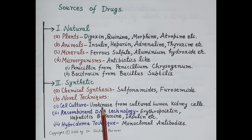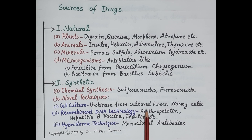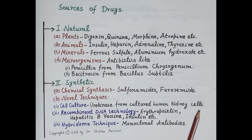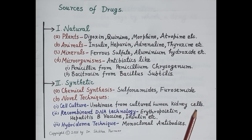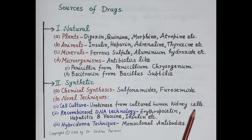Urokinase is therefore used in the management of cardiac diseases like myocardial infarction. This urokinase is derived from cultured human kidney cells — that is, human kidney cells are grown in the laboratory under controlled conditions, and from this culture, urokinase is derived.